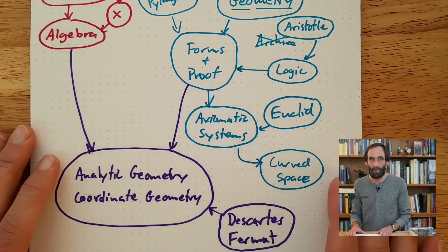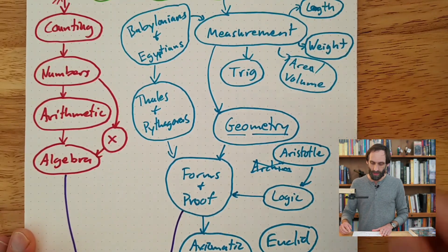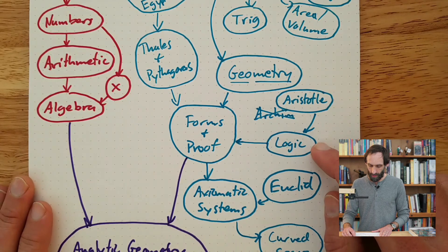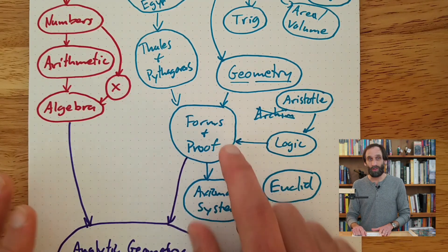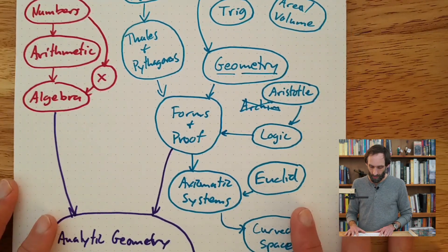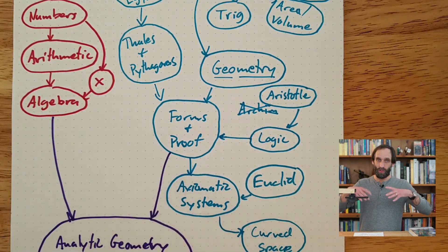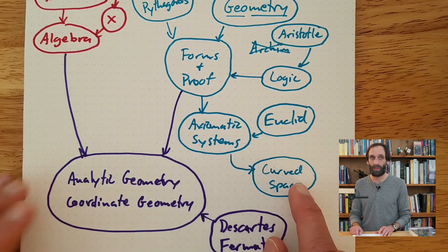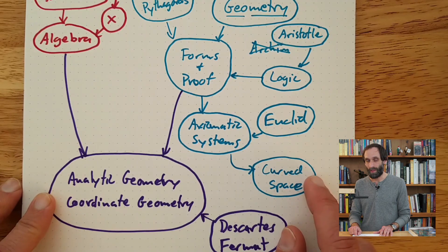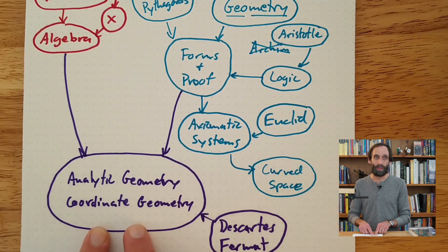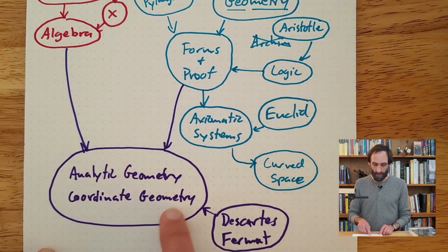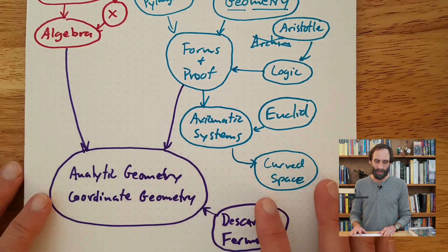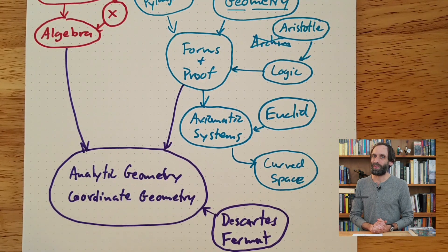So that's a roadmap of the course. We start with measurement, which will include some trigonometry. From there we move into logic. After our unit on logic, we spend time on forms, proof, and axiomatic systems — what I call Euclidean geometry — where we'll prove theorems and build up the axiomatic system. After that, we'll go into curved space, and then we'll end the course with the synthesis between algebra and geometry in analytic geometry. I look forward to seeing you in the next video. Bye-bye.